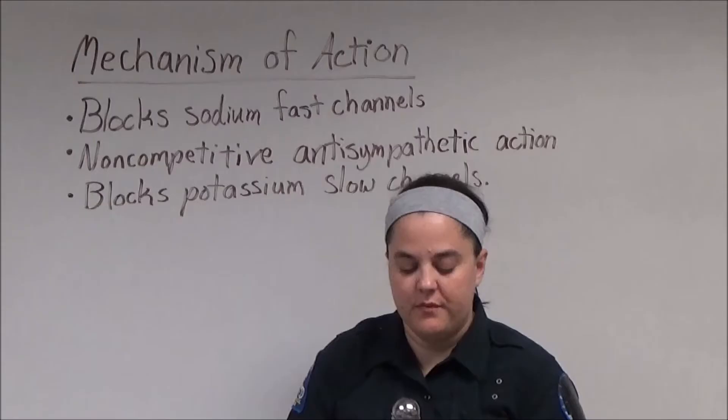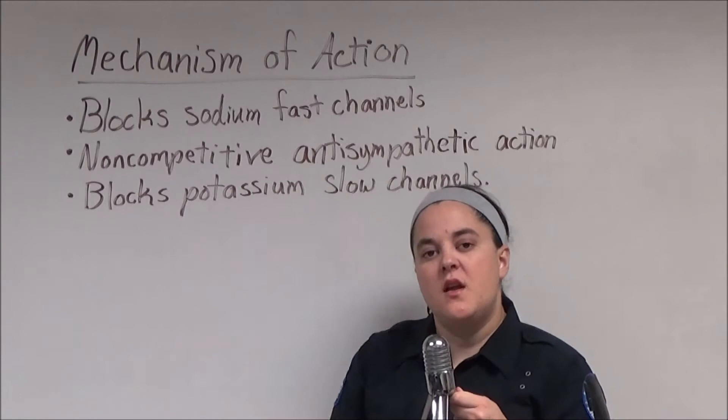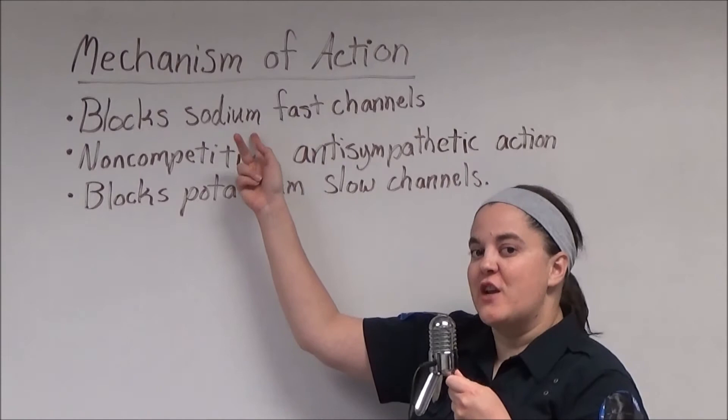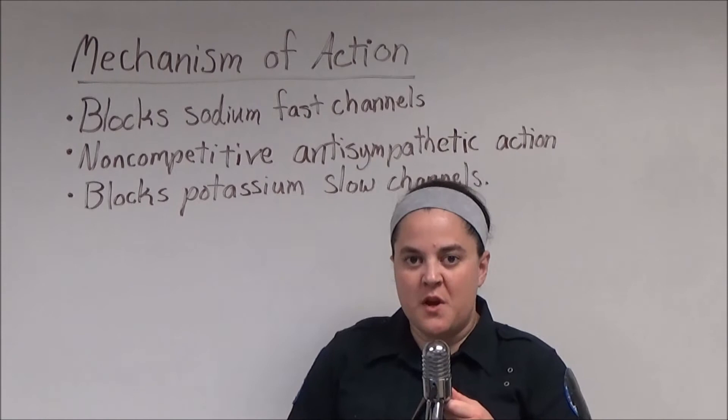While amiodarone is a class III antiarrhythmic, it does have class I and class II properties. Like class I antiarrhythmics, amiodarone blocks sodium fast channels, and like class II antiarrhythmics, amiodarone has a non-competitive antisympathetic action. Amiodarone prolongs phase III by blocking the potassium slow channels, which delays repolarization and causes smooth muscle relaxation.